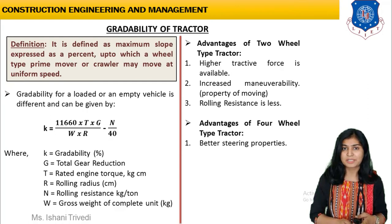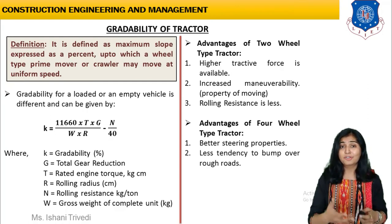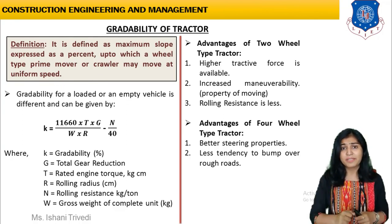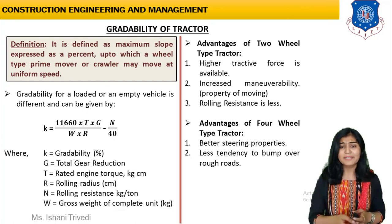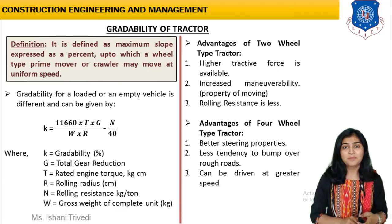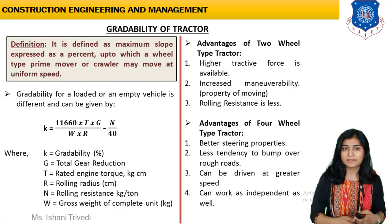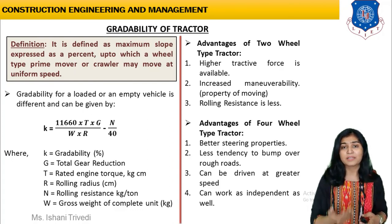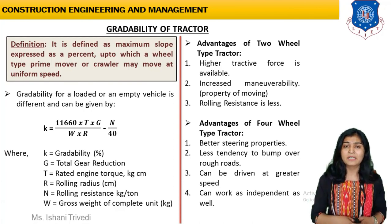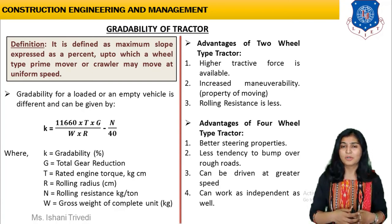For the four-wheel type tractor: first, better steering properties — the control of steering is achieved more in a four-wheeler, similar to how a car has more stability than a two-tire vehicle. Second, less tendency to bump over rough roads — lesser impact compared to two-wheel. Third, it can be driven at greater speed and can work as an independent unit — you can use it independently as a vehicle as well. So let us keep up to tractors for today. In the next session, we will discuss another basic level equipment — the bulldozer. Till then, memorize everything. Have a good day. Thank you.